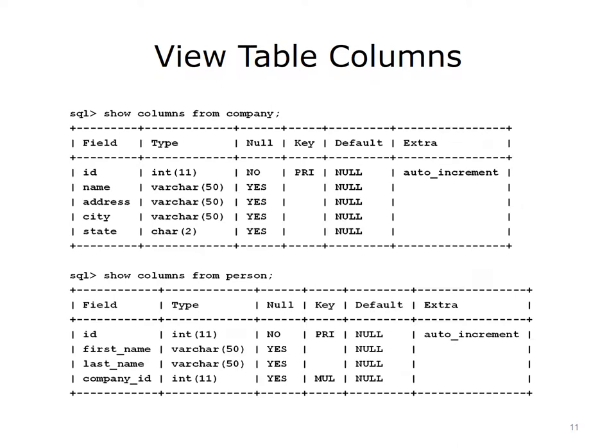To verify the correct columns and data types are in the tables, a SHOW COLUMNS FROM command is issued for each table. Along with displaying additional detailed information, this will confirm that the individual tables have the expected names and data types, and that the primary and foreign keys, which are abbreviated in this table as PRI and MUL, have been correctly identified.